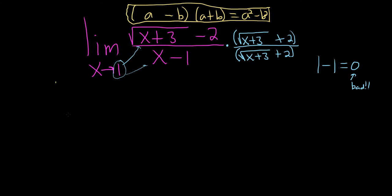So let's go ahead and write the limit down again. So limit as x approaches 1. And let's apply the formula. So in the numerator, our a is the square root of x plus 3. You see it's a minus b, a plus b.